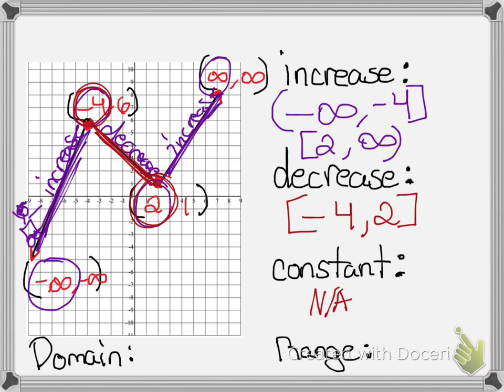To find my domain, I'm now going to look at all of my order pairs and choose the smallest x value out of all of them — that would be negative infinity. And my largest x value from all of my order pairs will be positive infinity, so my domain goes from negative infinity to positive infinity.